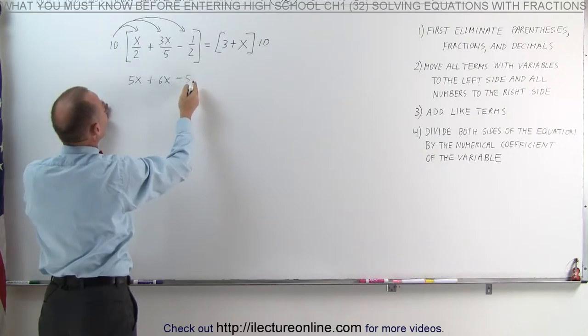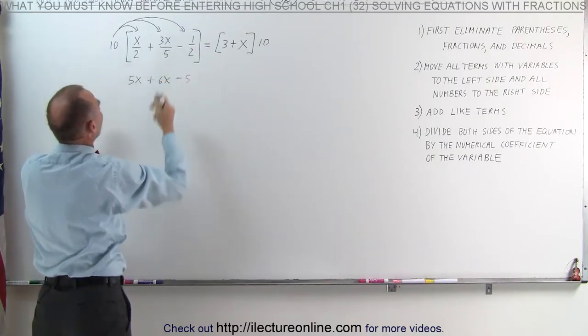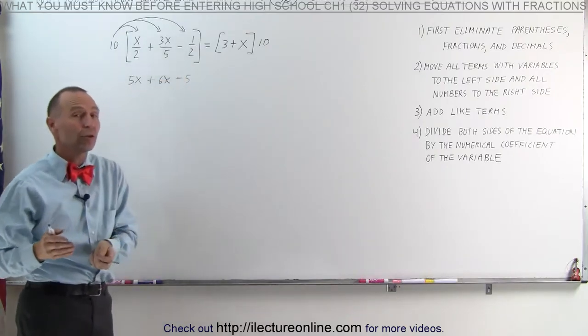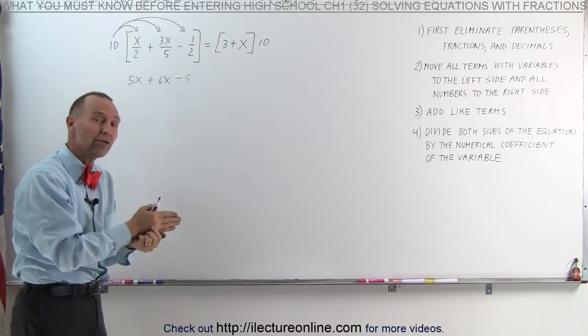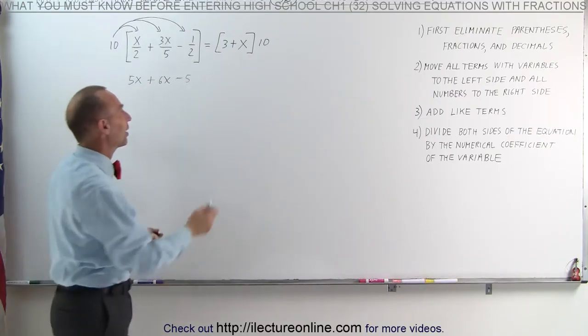Notice I've eliminated the fractions by multiplying the left side by 10, but I must also multiply the right side by 10. Again, whatever you do to one side of the equation, you must do exactly the same to the other side of the equation.